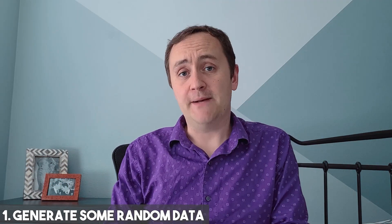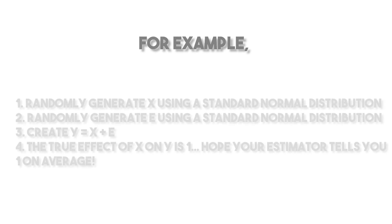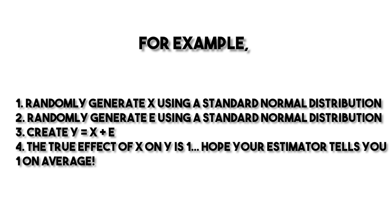Step one: we need to generate some random data. You'll use a random number generator to generate data with whatever properties you want. In causal inference, that means including some sort of causal effect you'll then try to recover. If you generate one random variable X and another Y using X in its creation, then X causes Y — for example, drawing X from a normal distribution and generating Y with mean X, so a one-unit increase in X gives a one-unit increase in Y.